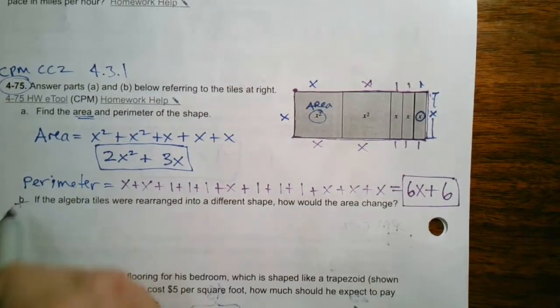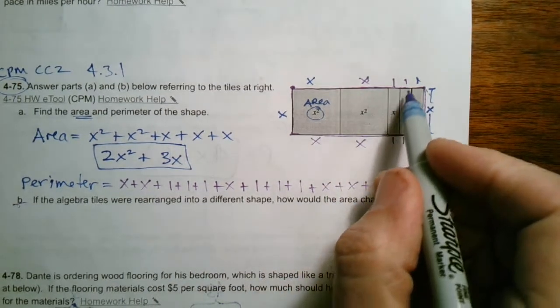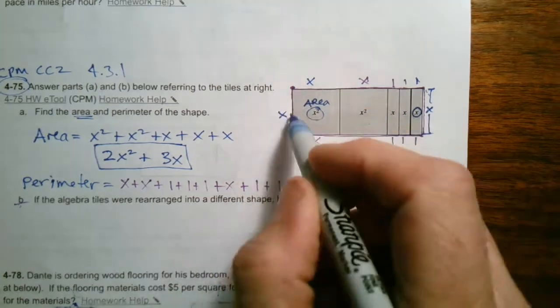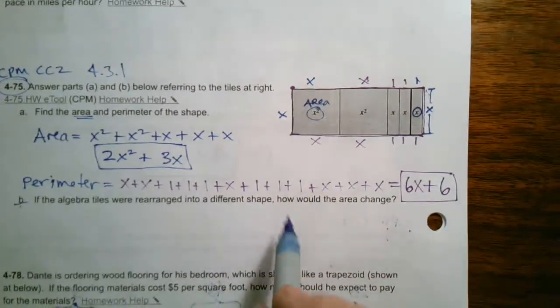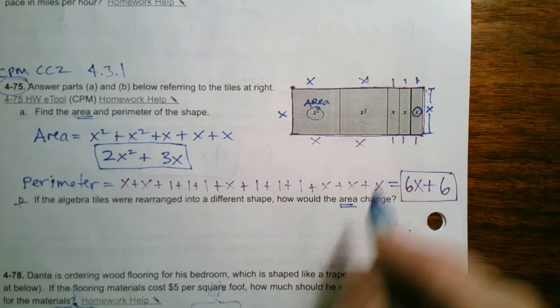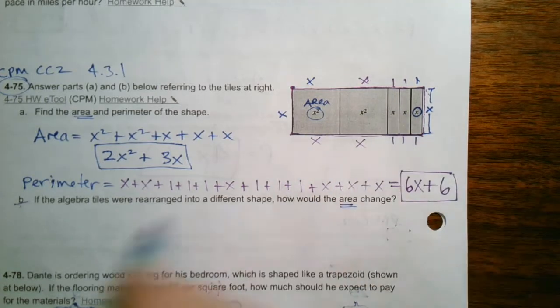So then it asks this question. Part B, it says, if the algebra tiles were arranged in a different shape, if I were to take these tiles here and put one of them down here, one of them up here, one of them over there, or take those x tiles and move them around in a different way, it asks, how would the area change? Would the area change if I move the shapes? Well, no, it wouldn't.